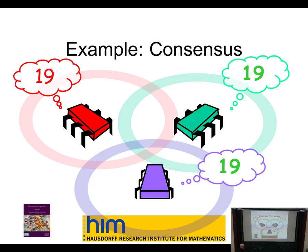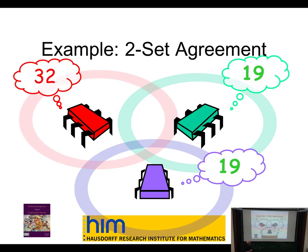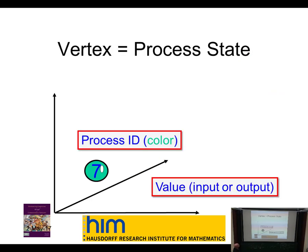One fairly standard task is consensus, where everybody has to agree on somebody's input — it has to be somebody's input to rule out trivial cases. One thing we'll talk about is something called k-set agreement, which is a weakening of consensus where you're allowed to choose k distinct inputs but no more than that. This turns out to have a geometric interpretation that's very useful.